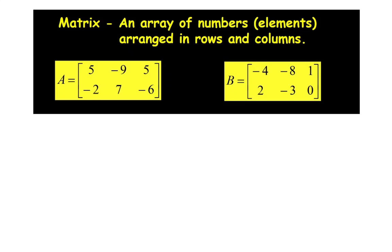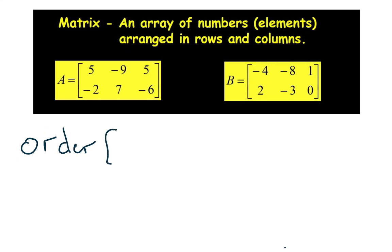A matrix is really just an array of numbers — that's a fancy way to say the numbers are organized in rows and columns. It's not just a bag of numbers all scrambled up; they're in an array. Here we have matrix A and matrix B — you'll probably want to jot those down. The first thing we can talk about is the order of a matrix.